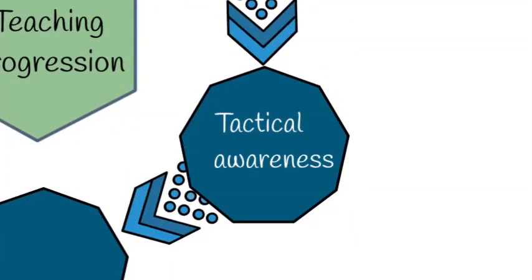The third step is tactical awareness. An appreciation of the game soon evolves into an awareness of the different tactical options that are available. The key thing here is to focus students' attention on good play that is effective in solving the problems they encounter in playing the game. This can be as simple as asking students, 'Why did that work?' when something good happens.